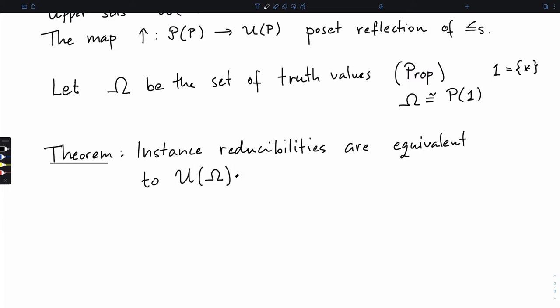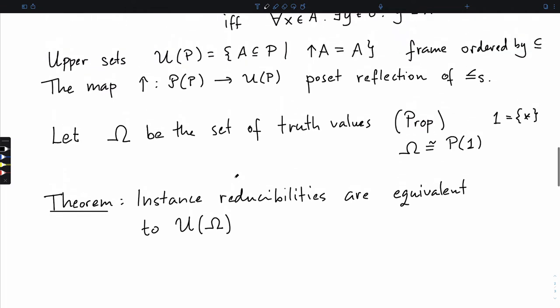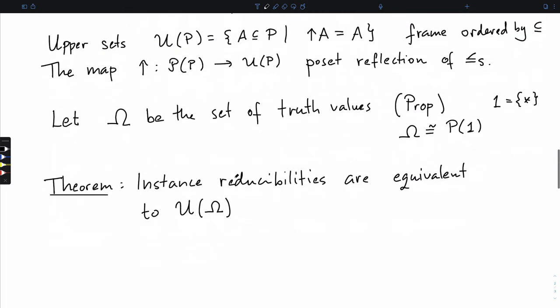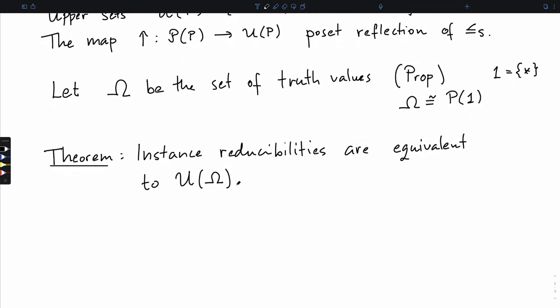Here's a theorem: instance reducibility is equivalent to the Smith pre-order on P(omega), or equivalently to U(omega), which is a frame. This is not too difficult to prove - all the proofs, if you look at the preprint, are formalized in Coq because it was easier than fiddling with first-order logic. It all just reduces to a bunch of for-all-exists implications and then you prove it.